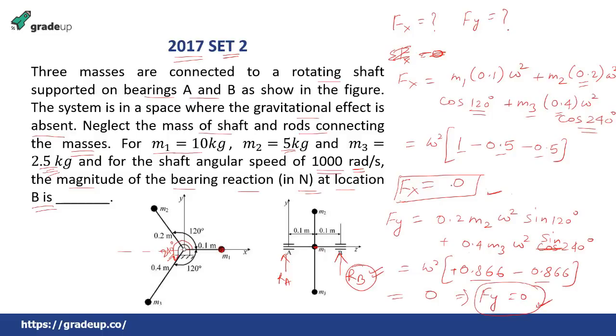So in this case, as you can see that there are no forces acting, there are no unbalanced forces that are acting because of these three masses, the system is already balanced. So there will be no reaction along this or either this. So in this case, Ra will be also equal to 0 and Rb also equal to 0. And we are concerned or we are asked only about the reaction at B. So we can write down the reaction at B is 0. The magnitude of the bearing reaction in Newton at location B is 0. Simple question? Very simple.